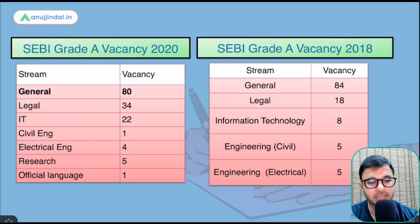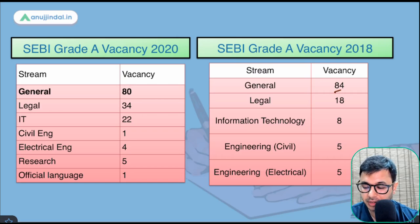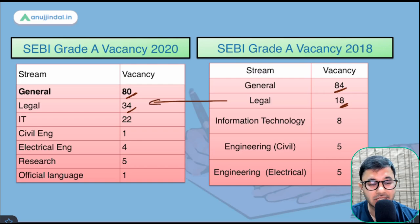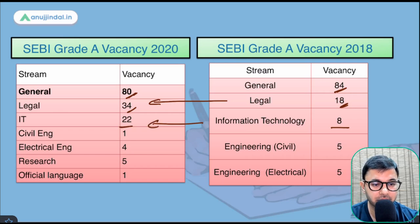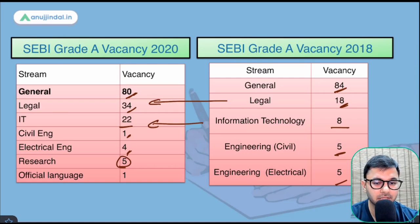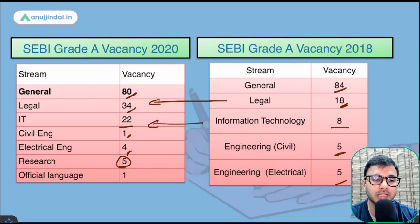Coming to vacancies — in 2018 there were 84 general vacancies, and in 2020 there were 80 general vacancies. For legal there were 34 and 18, showing a stark increase likely due to complexities in the capital market requiring more legal experts. We also see a new vacancy for research. Civil and electrical engineering saw a fall in vacancies. For 2021, we are expecting a similar number of vacancies.